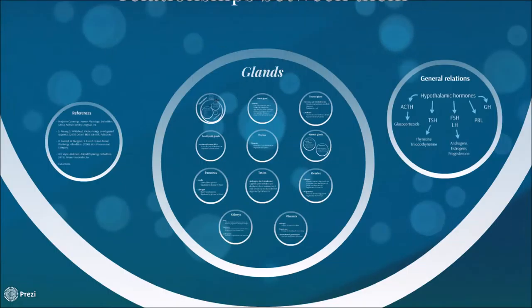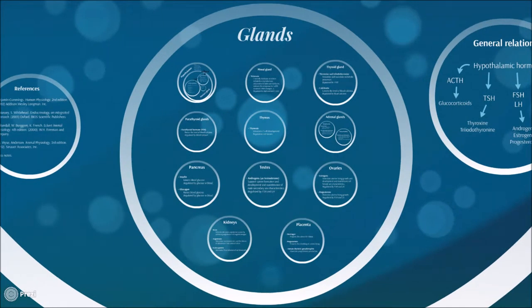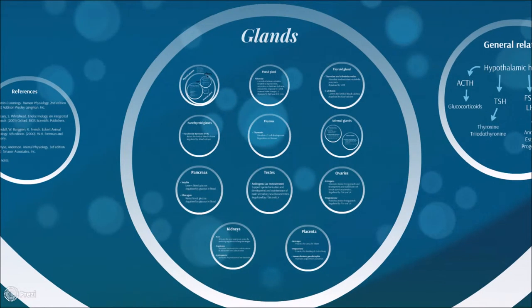Some of the main glands in our body are the hypothalamus, which is tightly related to the pituitary gland, the pineal gland, the thyroid gland, the parathyroid glands, the thymus, the adrenal glands, the pancreas, the testes and the ovaries, the kidneys and the placenta in substitution of the corpus luteum. Each of them produces a series of hormones that regulate different processes in our body, and now we're going to analyze them in depth.